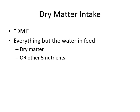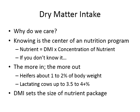The first thing we're going to talk about really isn't a nutrient per se, but it's something we use quite a lot — dry matter intake, abbreviated DMI. That's everything in the feed when the water is removed: the dry matter, or the other five nutrients — protein, fat, carbohydrate, minerals, and vitamins left in the feed. We care about DMI because it's the center of our nutrition program; half of figuring out nutrient intake is determining DMI for a particular animal or group.